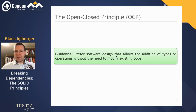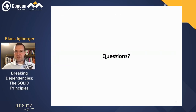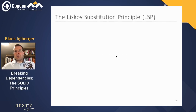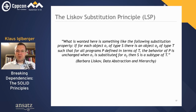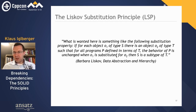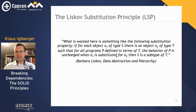Which brings us to the third principle: the Liskov Substitution Principle. Barbara Liskov's original statement: if for each object O1 of type S, there is an object O2 of type T, such that for all programs P defined in terms of T, the behavior of P is unchanged when O1 is substituted for O2, then S is a subtype of T. This is very concrete and accurate for a mathematician. However, a simplified form might be sufficient: subtypes must be substitutable for their base types.